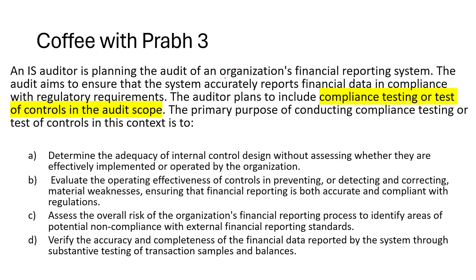Next question: An auditor is planning the audit of an organization's financial reporting system. The audit aims to ensure the system accurately reports financial data in compliance with regulatory requirements. The auditor plans to include compliance testing or test of controls in the audit scope. The primary purpose of conducting compliance testing in this context is — Option A: determine the adequacy of internal control design without assessing whether they are effectively implemented or operated.